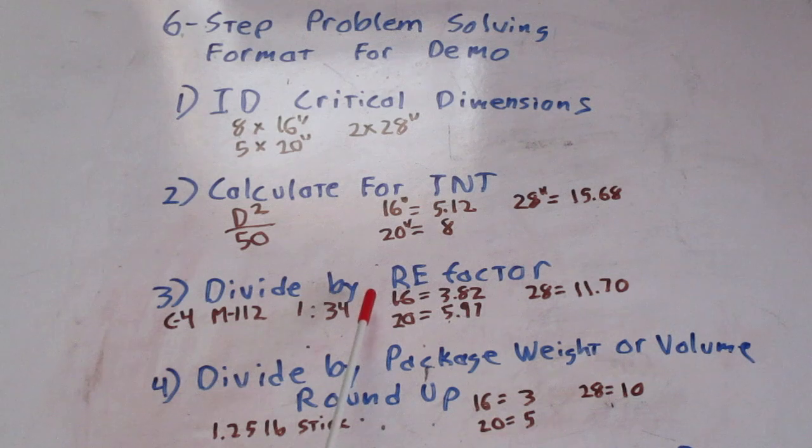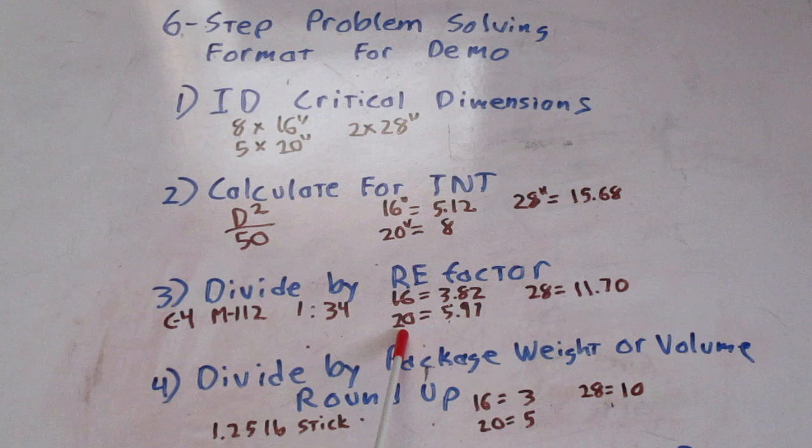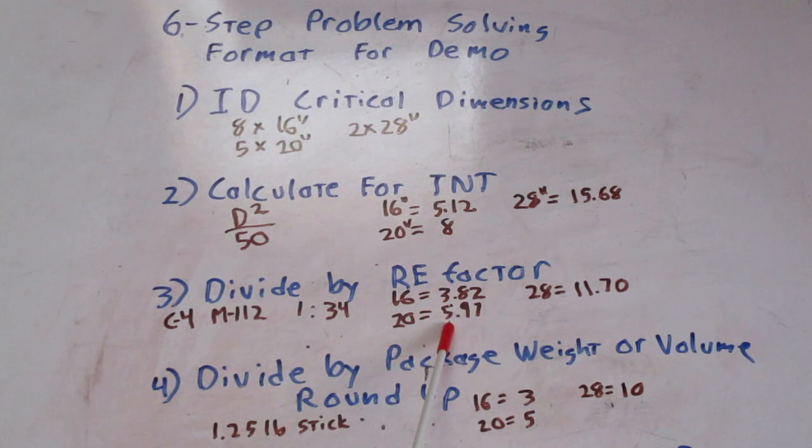Now, we take our poundage for TNT, and we convert it to C4. We come out for the 16 inch trees, 3.82 pounds. For the 20 inch trees, 5.97 pounds. For the 28 inch trees, 11.70 pounds. So, we move on to our next step, which is divide by the package weight or volume and round up.